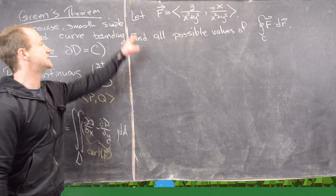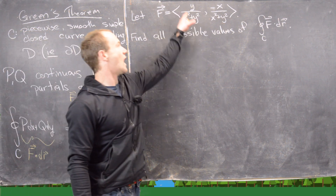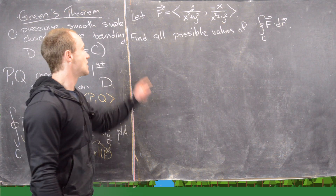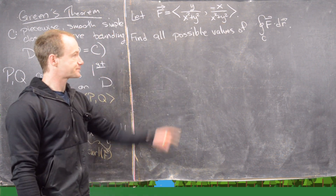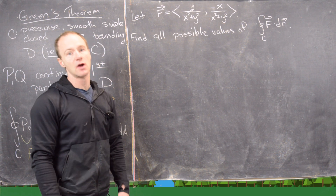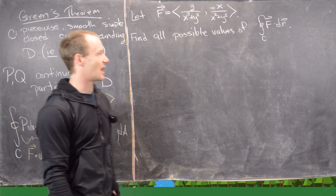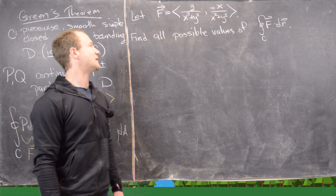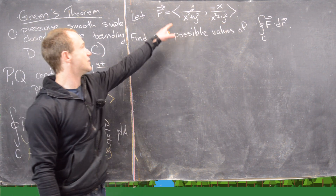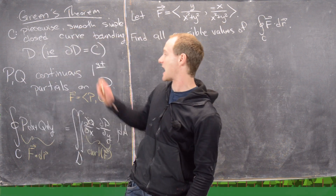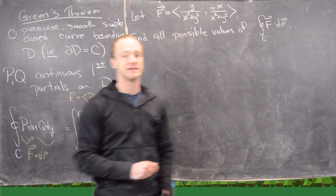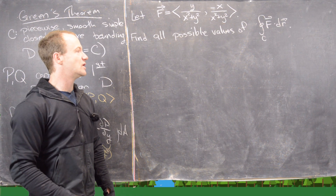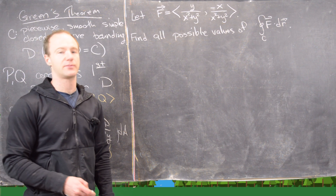What we want to look at now is the vector field F = (y/(x² + y²), −x/(x² + y²)), and we want to find all possible values of the line integral over C, where C satisfies the hypotheses. There's some badness happening at the origin, because the component functions do not have first partials there. So we cannot apply Green's Theorem if our region contains the origin, which means we have to split this into a couple of cases.